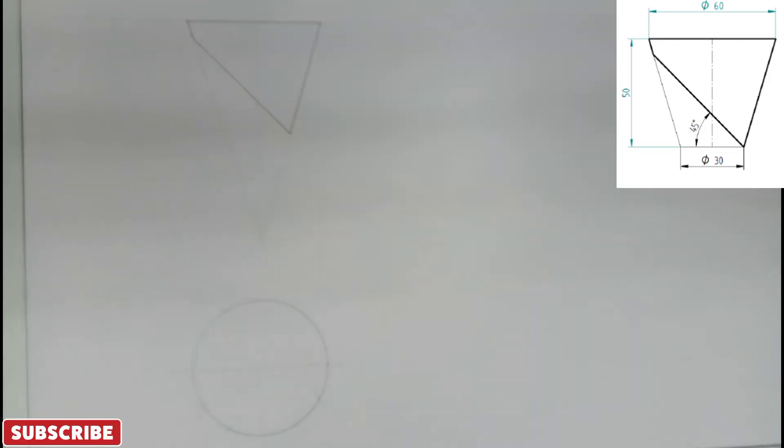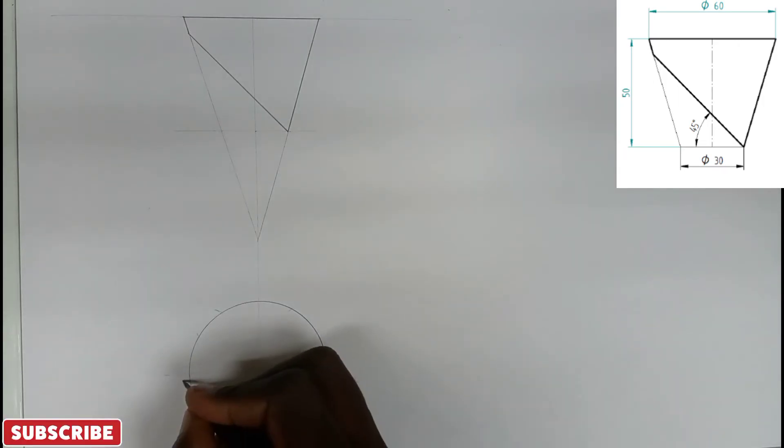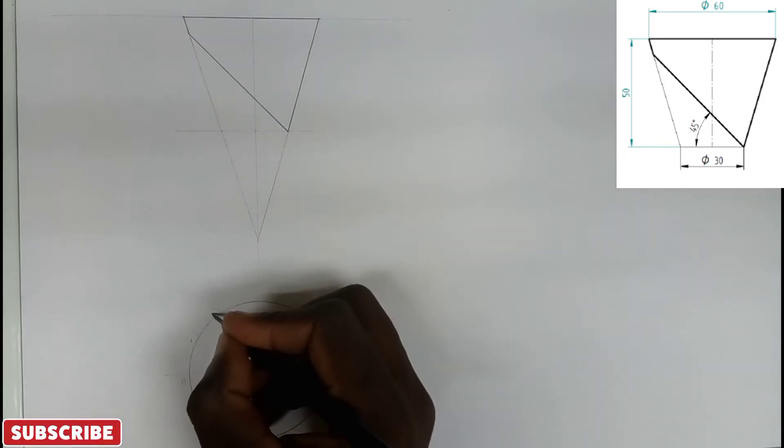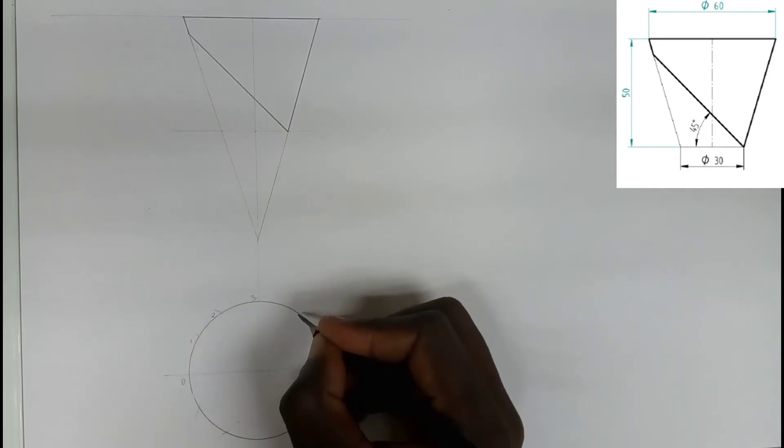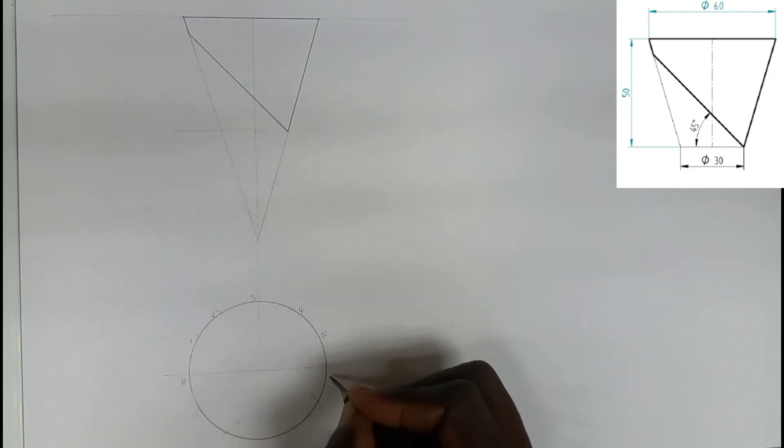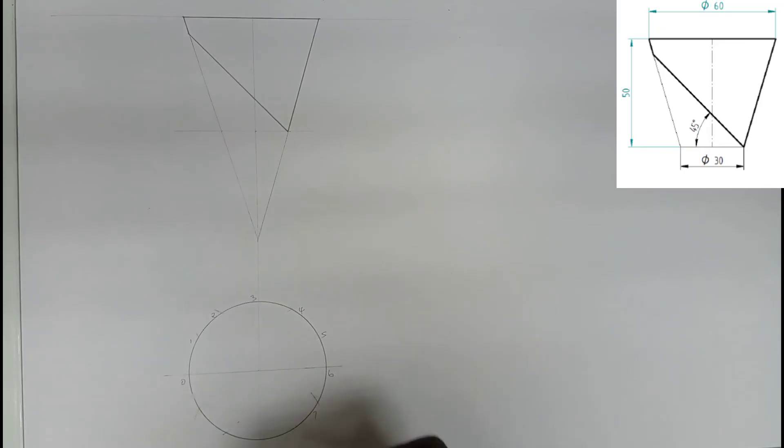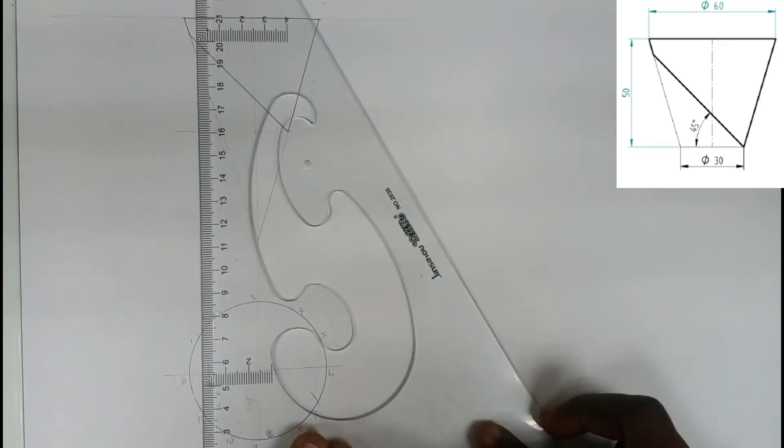Now that we've divided our circle into equal parts, the next thing I'm going to do is name our points. This is 0, 1, 2, 3, 4, 5, 6, 7, 8, 9, 10, 11, and 12. Now we project our points upwards.